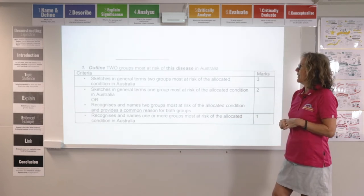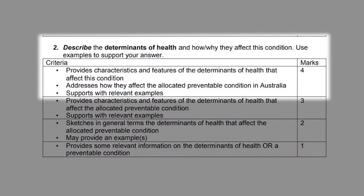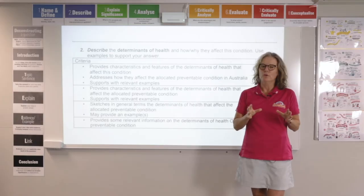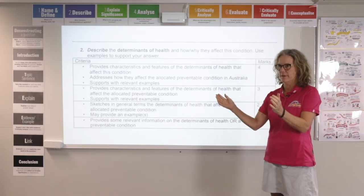The second question is to describe the determinants of health. The important bit here to get the top mark is you need to include the how and why they affect this condition. The difference between the top two marks is the fact that you address how the determinants affect the allocated preventable condition. You all know the determinants of health and you've all looked at which ones affect which condition, but you need to explain how they affect it.